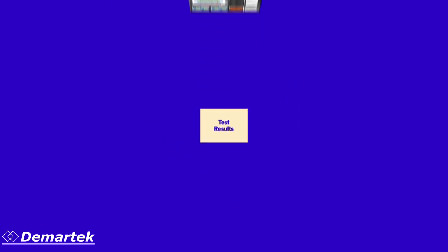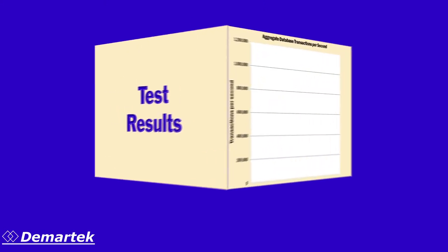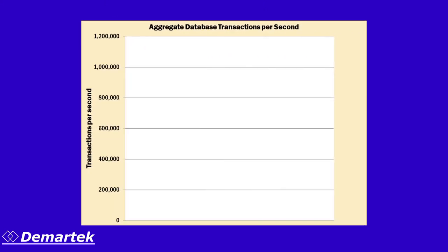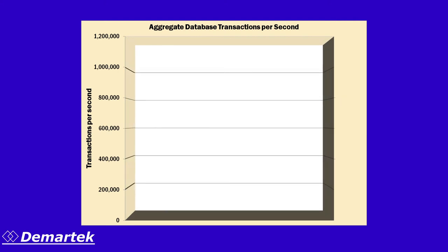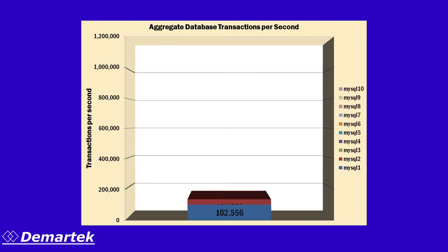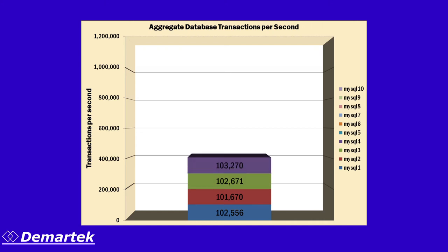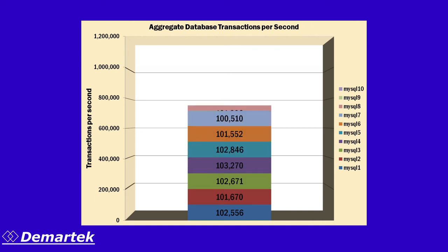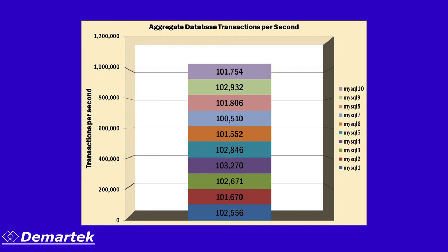But now let's get to the performance results. We ran 40 instances of MySQL across 10 physical servers concurrently, addressing 8 mirrored volumes configured in the Gridiron FlashCubes. We measured the rate at which the MySQL transactions were completed. As you can see in the chart, the aggregate IOPS from all of the database servers exceeded 1 million IOPS.